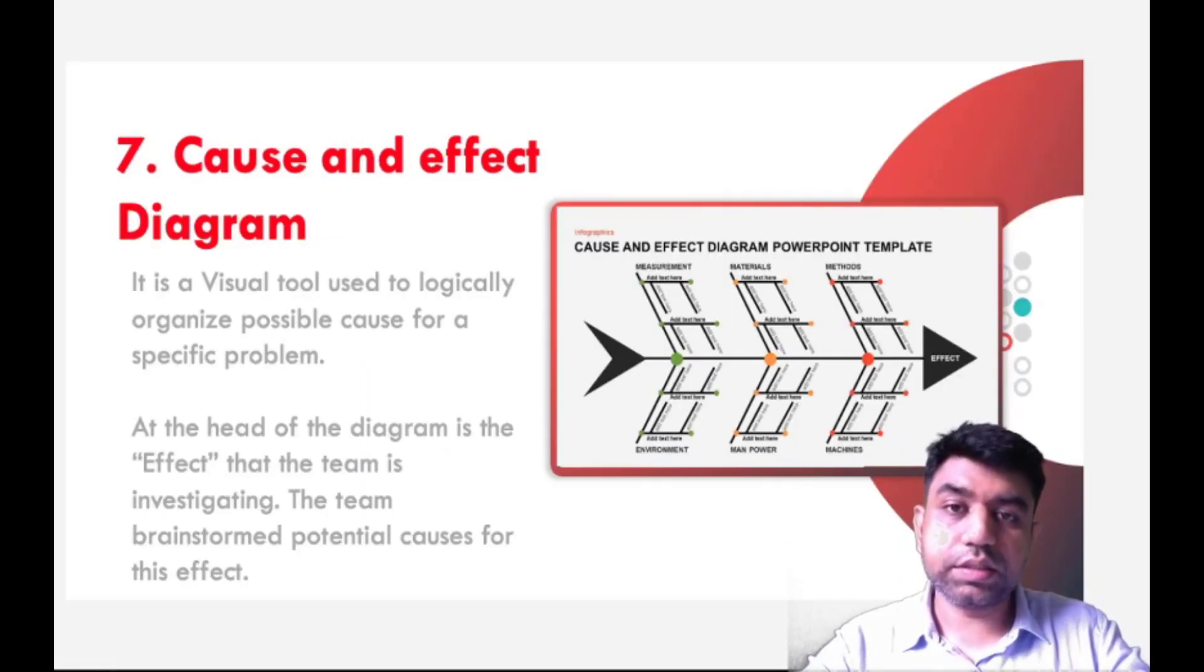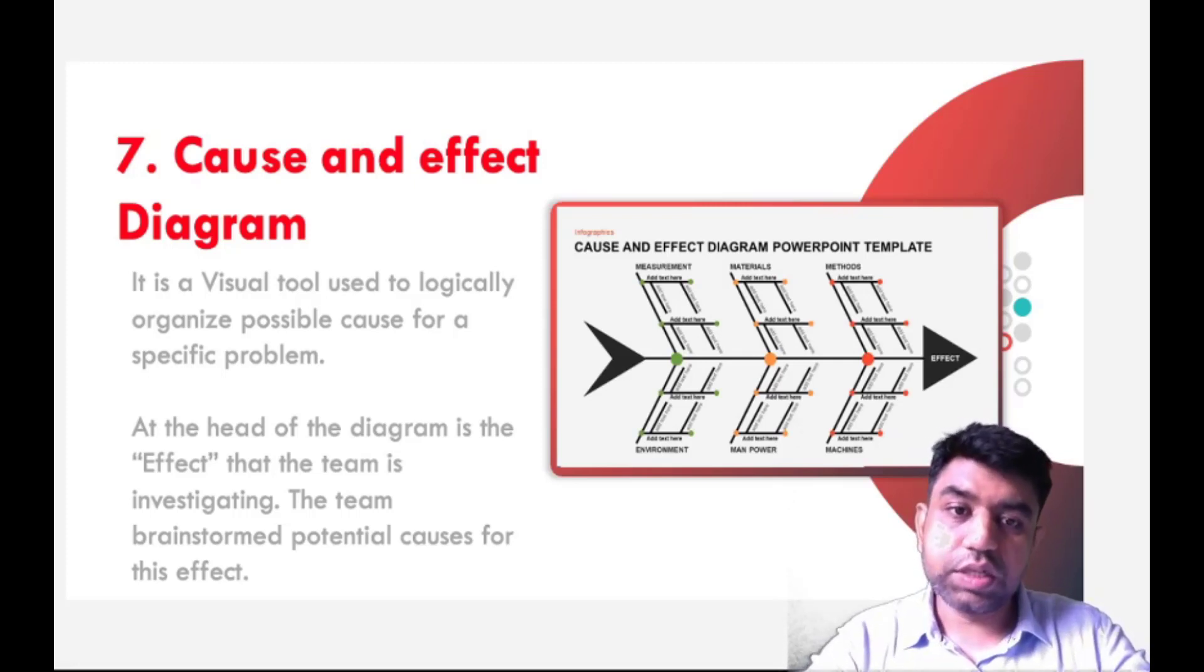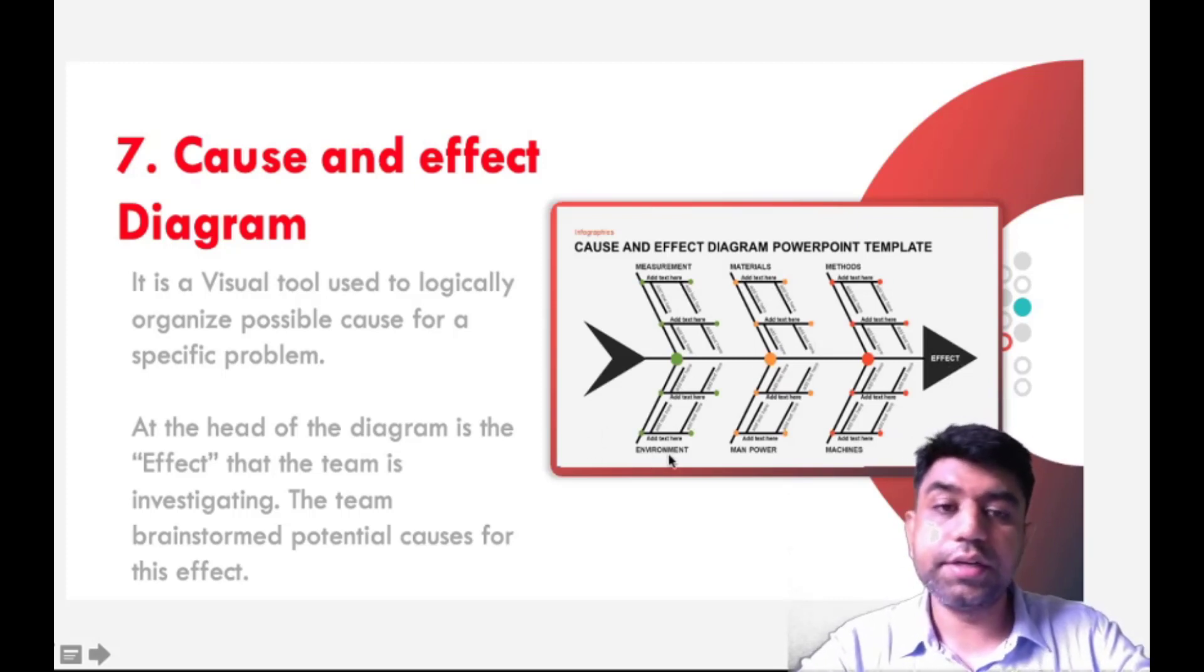The seventh and the last basic 7 QC tool is a cause and effect diagram. About this diagram, we already understood during the understanding of quality gurus in chapter number one. At that time, I introduced you to Ishikawa who had given this diagram, cause and effect diagram. That's why it is also called Ishikawa diagram. In this, we are having the representation of cause and effect like a fish bone. The mouth of the fish actually represents the effect, and the bones part defines the reasons behind that particular effect. The reasons may be related to measurement, materials, method, environment, manpower, and the machine.